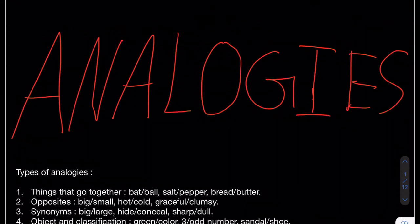Hello everyone, welcome to your GAT lesson. I have listened to your requests — there is not a single resource on the internet that covers the verbal section of the GAT, and hopefully I'm here to change that. The verbal section consists of a few parts: sentence completion, comprehension, analogies, and more. Today we're covering analogies, and we will cover other parts in the future.